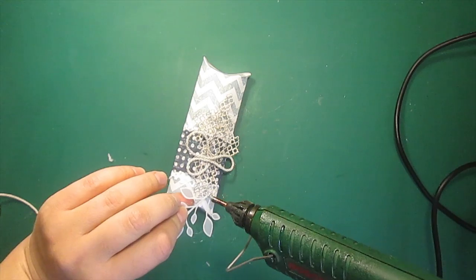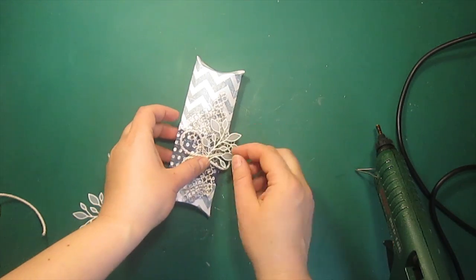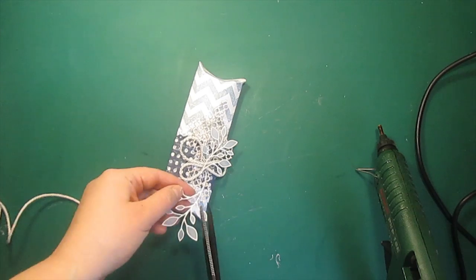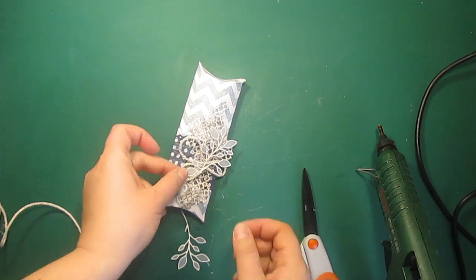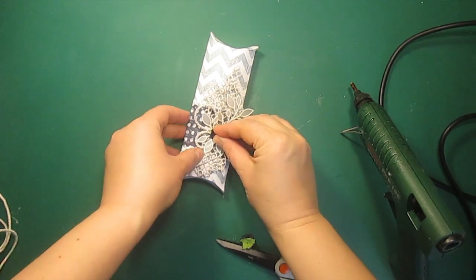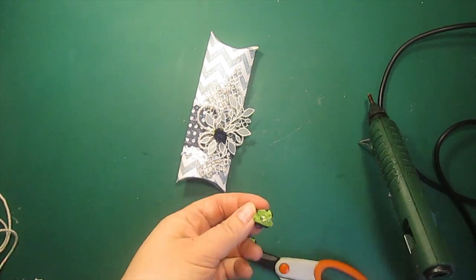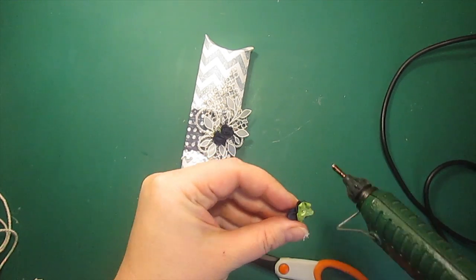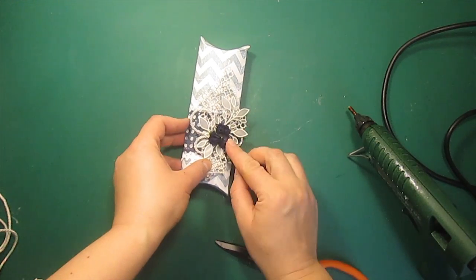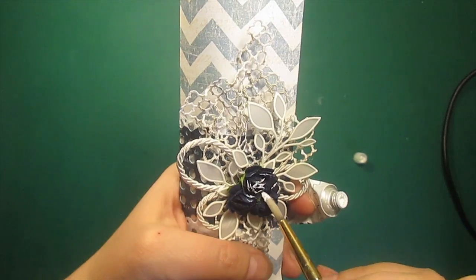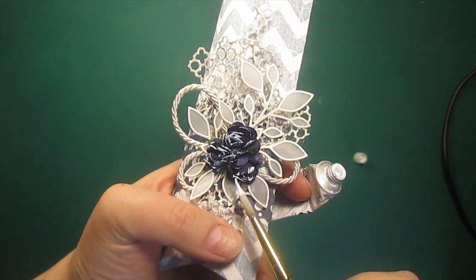Next come the leaves. And finally the three navy blue roses. As a finishing touch I'm applying some white acrylic paint onto the rose petals.